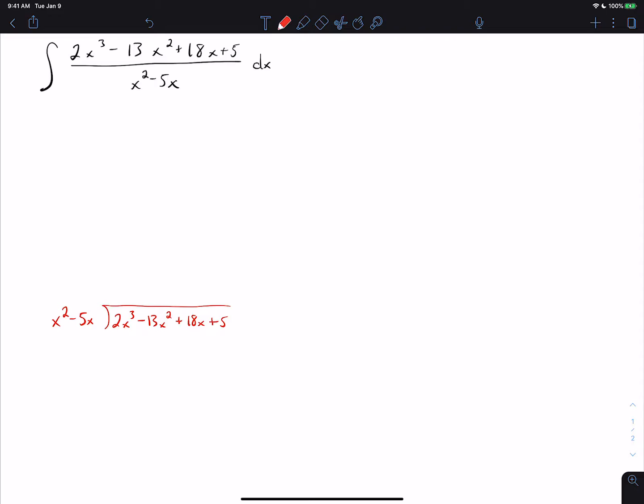To do that, we think what do you multiply x squared by to get 2x cubed? That's 2x and we line up the powers of x. You multiply 2x times each of the things on the outside of the division sign, so we get 2x cubed minus 10x squared and now we subtract. So we get 0 minus 3x squared because negative 13 minus negative 10 is negative 3 and we bring down the rest of the terms.